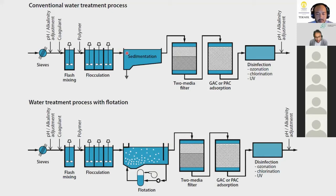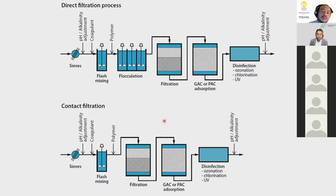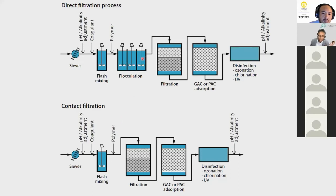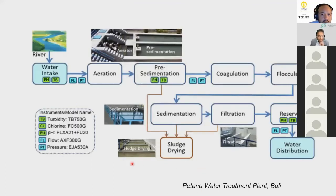More advanced systems add filtration after the common treatment sequence. Flotation can replace or supplement sedimentation, where dispersed pressurized air is added and sludge is skimmed from the top. Two more efficient systems are direct filtration — which includes flocculation but skips sedimentation, sending flocs directly to filtration — and contact filtration, where there is no separate flocculation stage and floc formation happens inside the filter. Contact filtration suits water with low turbidity and suspended solids.